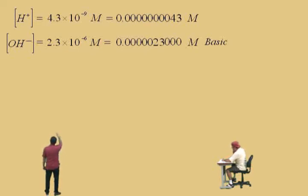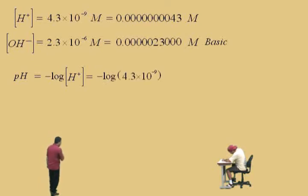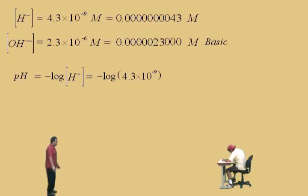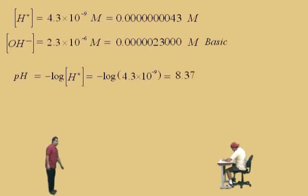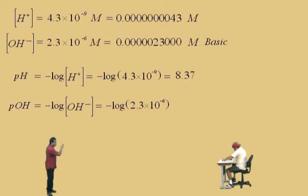Now let's calculate pH. Remember, what does p mean, Charlie? Negative log. And the H represents the hydrogen ion concentration. So we take the negative log of 4.3 times 10⁻⁹. We have two significant figures, so our answer should have two decimal places. We get 8.37. Now let's calculate pOH — the negative log of the hydroxide ion concentration, 2.3 times 10⁻⁶. Taking the log of two significant figures means two decimal places, and we get 5.64.